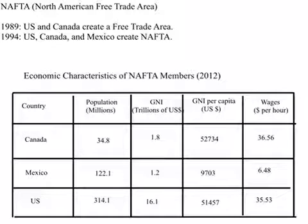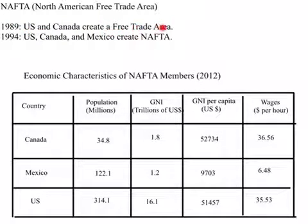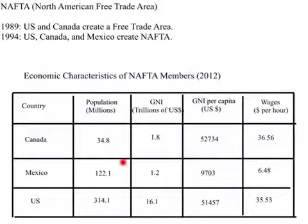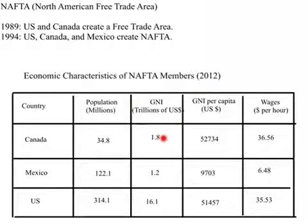Now let us look at another successful example: NAFTA, or the North American Free Trade Area. In 1989, the US and Canada created a free trade area, and in 1994, NAFTA was created as an alliance between the US, Canada, and Mexico. Looking at 2012 characteristics: Canada had a population of about 35 million, Mexico 122 million, and the US about 314 million. Total GDP was Canada $1.8 trillion, Mexico $1.2 trillion, and the US $16.1 trillion, making the US the dominant economic power in this alliance.